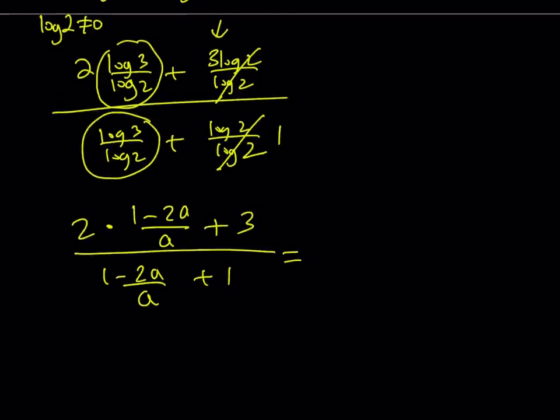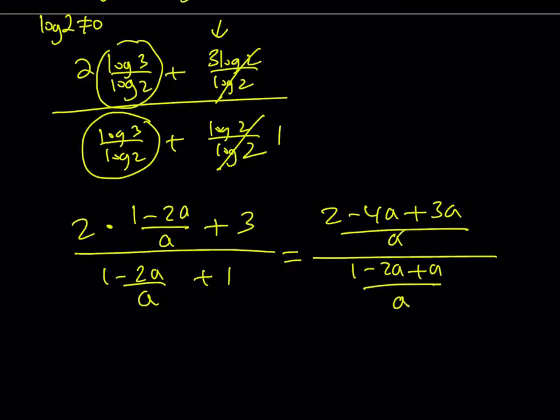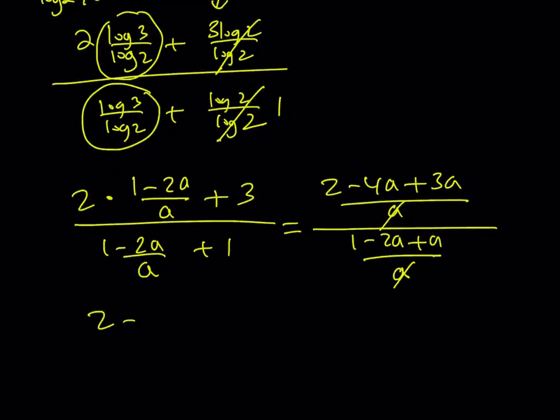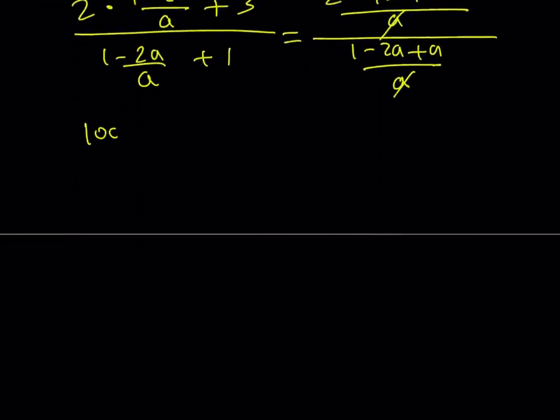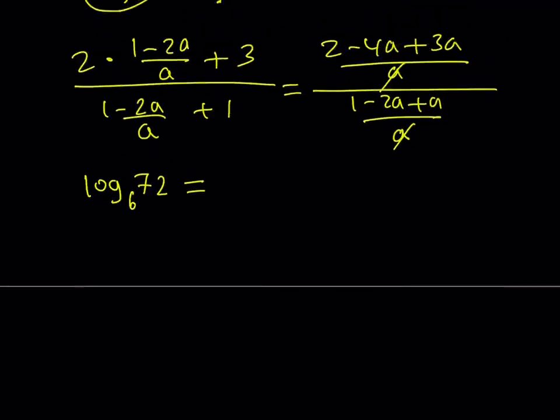Multiply and make a common denominator. That's going to be 2 minus 4a, and then plus 3a, because I need to make a common denominator. And then, that's going to be a. The bottom is going to be 1 minus 2a, plus a, over a. The a cancels out when you flip and multiply. The top is going to give you 2 minus a. So, let's go ahead and write it. Let's remember the original expression. I was trying to find log 72 with base 6, and that can be written as, from here, 2 minus a, divided by 1 minus a.